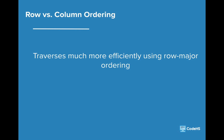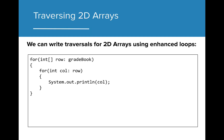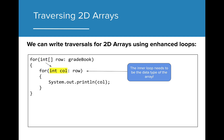It's important to note that while column ordering can be useful depending on the circumstance, Java traverses more efficiently using the Row Major ordering. We will explore this a bit more in one of the exercises to follow. We can also write traversals using enhanced loops. The outer loop of the enhanced loop needs to be an array data type so as to access each array within the 2D array, and the inner loop needs to be the data type of the array that is being accessed. In this case, because the array stores int values, the inner loop should be initialized to an int value.